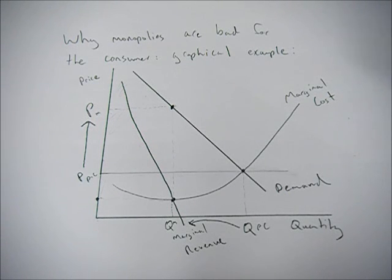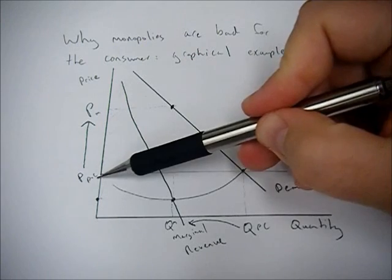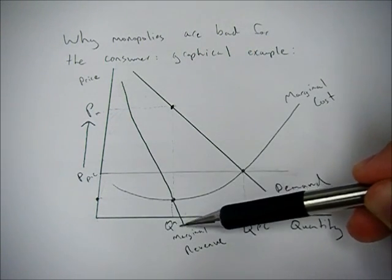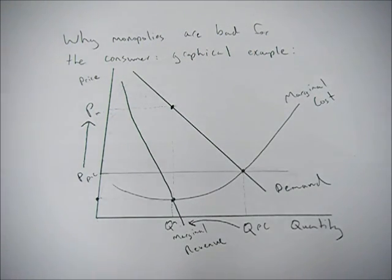We've just shown how with monopolies, they can charge much higher prices and give out much lower quantity simply because they have market power.